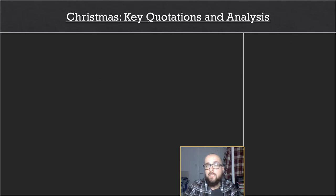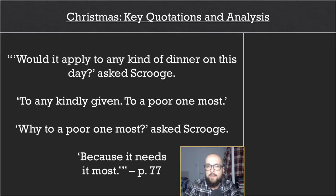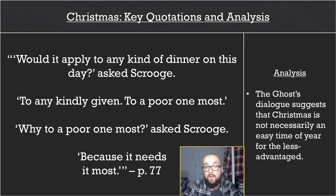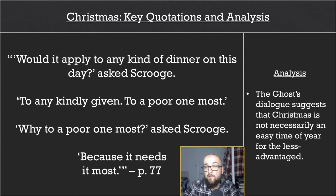Still in Stave 3, there is a brief exchange between Scrooge and the Ghost of Christmas Present, which occurs when the miser notices the spirit sprinkling incense from its torch. Their exchange is: 'Would it apply to any kind of dinner on this day?' asked Scrooge. 'To any kindly given, to a poor one most.' 'Why to a poor one most?' asked Scrooge. 'Because it needs it most.' This dialogue suggests that Christmas time is actually quite difficult for the less advantaged. With many of the working class having to work on Christmas Day, their celebrations paled in comparison to their more fortunate peers — it was far from the romanticised event made out by the middle and upper classes.